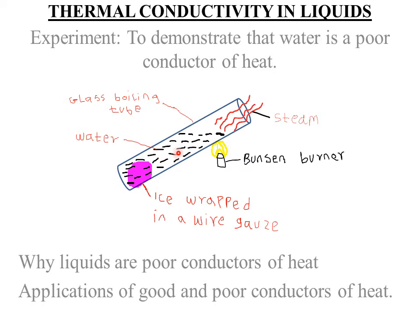You can be expected to describe a simple experiment showing that water is a poor conductor of heat. Water is boiling at the top, but the heat does not reach the wire gauze, that's why the ice does not melt. This shows that water is indeed a very poor conductor of heat.